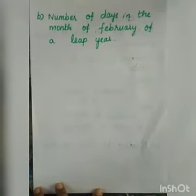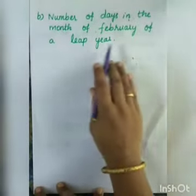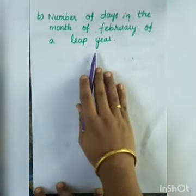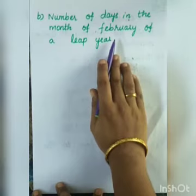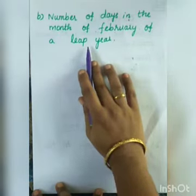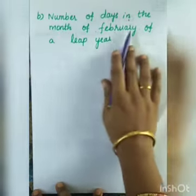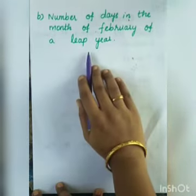Question number 2: the number of days in the month of February of a leap year. In a leap year, February has 29 days. So we need to write the Roman numeral for 29.